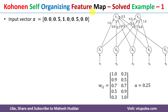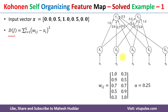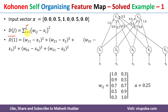We will apply the Kohonen self-organizing feature map algorithm to identify the winning cluster for this input vector. To calculate the Euclidean distance, we use the formula: D(j) equals the summation from i=1 to n of (W_ij minus X_i) squared. Here n is the number of input units, which is 5, so we sum from i=1 to 5.